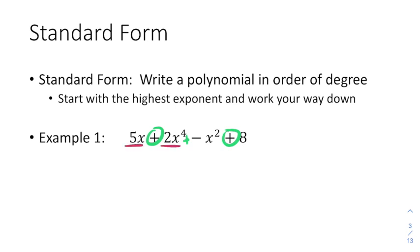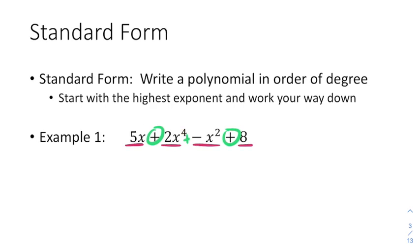So for this example, we have 5x as a term, 2x to the fourth as a term, negative x squared as a term, and 8 as a term. We're looking at the degree of each of these terms, which is the exponent. If you don't see an exponent, there's really a little one up there. So this term is to the first degree, this is to the fourth degree, this is to the second degree, and this last term is called a constant because it doesn't have x at all.